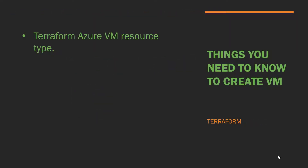First of all you need the AzureRM resource provider and the virtual machines resource type. We will get to know what different resource types we are going to use. Next you need the input data. The input data to create and run your Terraform script could be in HCL format, which is the HashiCorp language format, or it could be in JSON format.